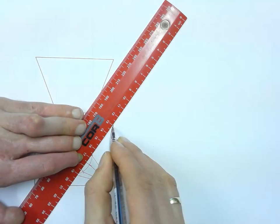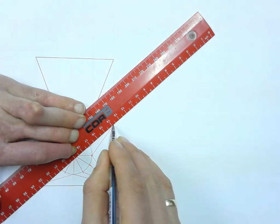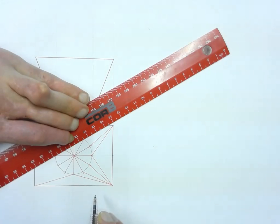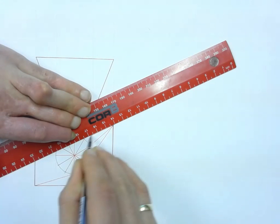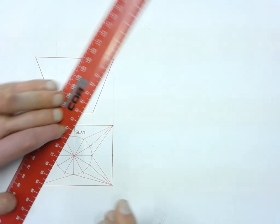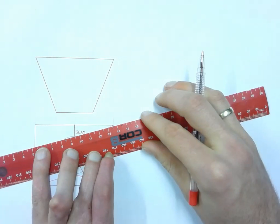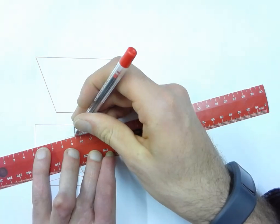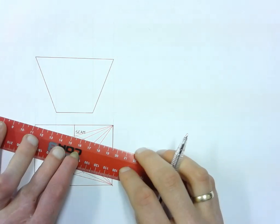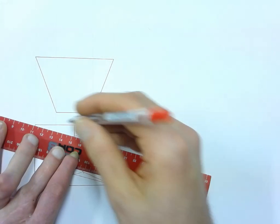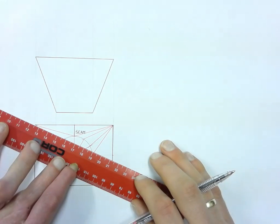This of course creates the triangulation that you need to be able to complete the development of a curved surface. Any surface on a hopper can only be developed using triangles, so we are creating all the triangles we need to develop a curved surface.